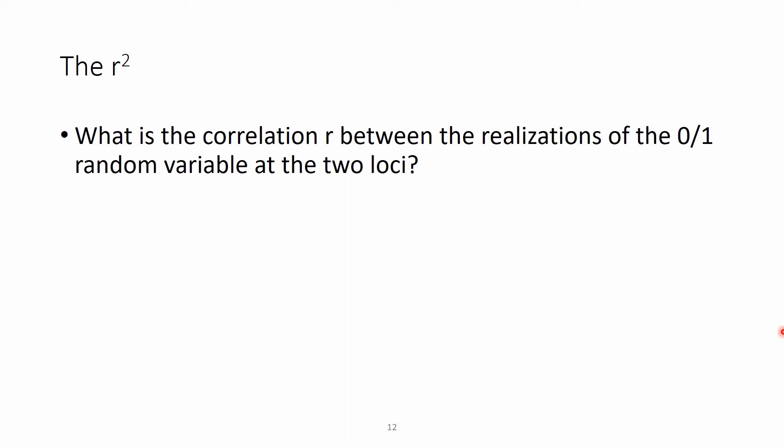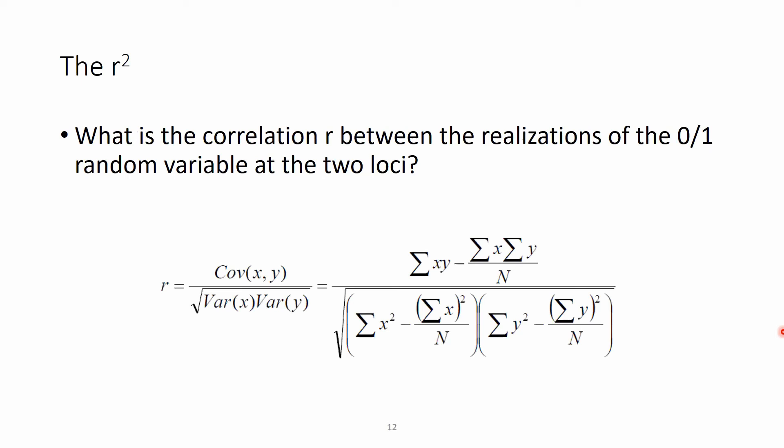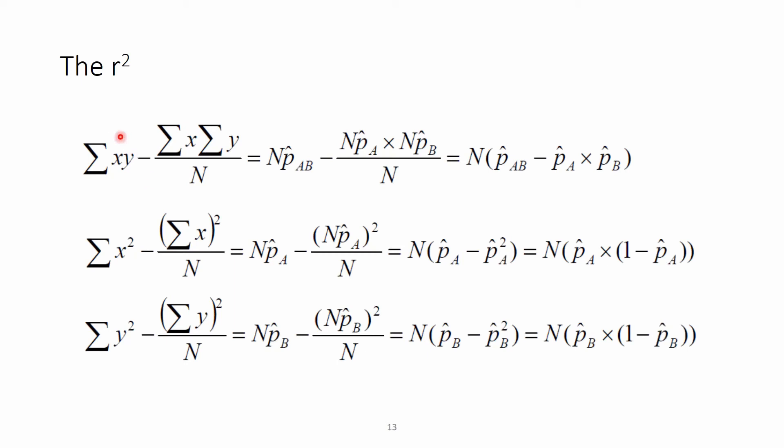Then the follow-up is what is the correlation between the realizations of 0 and 1 of a random variable at the two loci? And here comes again the equation for the correlation coefficient, that is the r. This equation basically has three parts, that is one in the top, and then basically the covariance and the variance of x and the variance of y. Basically we have all these parts figured out already in the previous slide as shown here, so it can be replaced by n times the joint occurrence of A and B, and the sum x can be replaced by n times the proportion of A, and the y could be replaced as the n times proportion of B.